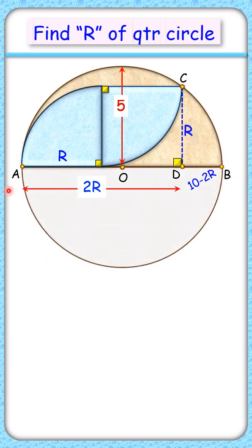Now let's complete this semicircle and extend CD to meet at point E. By symmetry, DE will be R cm. And here we have two chords AB and CD intersecting at point D.